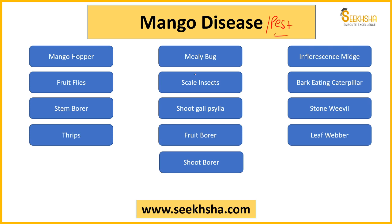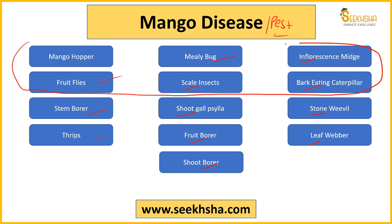So let us see the pest attacks. Major pest attacks yahan par hume cover karne hai: mango hopper, mealy bug, inflorescence midge, fruit flies, scale insects, bark eating caterpillar, stem borer, shoot gall midge, stone weevil, thrips, fruit borer, leaf webber, shoot borer. Part 1 ke andar hum pehle 6 pests discuss karenge — uptill bark eating caterpillar. Baaki ke next part ke andar discuss karenge.